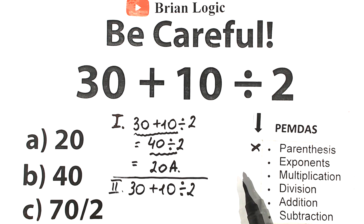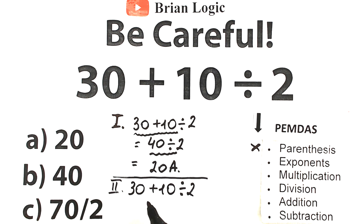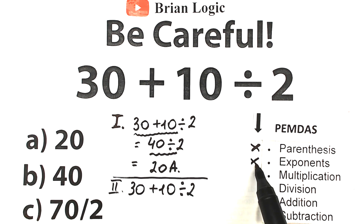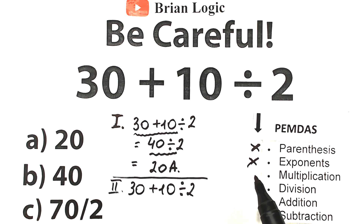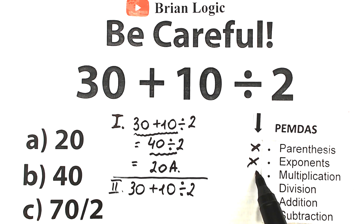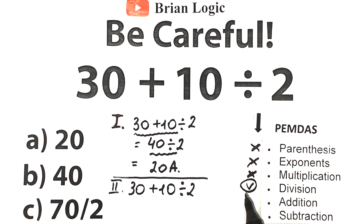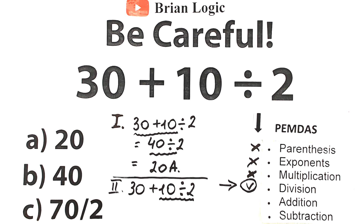Next step: exponents. Maybe cubes, fifth power, tenth power — I don't see any of those, so we skip this part as well. Next step: multiplication and division group. A lot of students make the mistake of only looking for a multiplication sign, but this is one combined group. We don't have multiplication here, but we do have division. So we found our first step — 10 divided by 2.